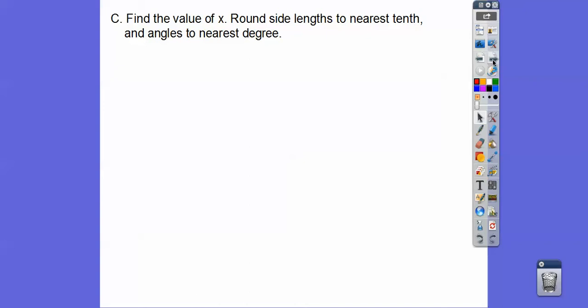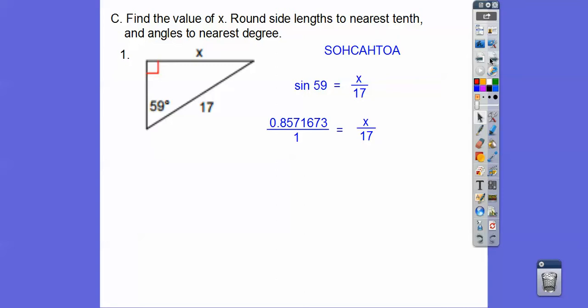So find the value of x. Round side lengths to the nearest tenth and angles to the nearest degree. This is Sohcatoa. So S-O-H-C-A-H-T-O-A. So they want us to find x. So here's an angle. Here is a side opposite, and this is the hypotenuse. So opposite hypotenuse, this is a sine ratio. So the sine of 59 is opposite over hypotenuse. And then find the sine of 59, cross multiply, and you get about 14.6.